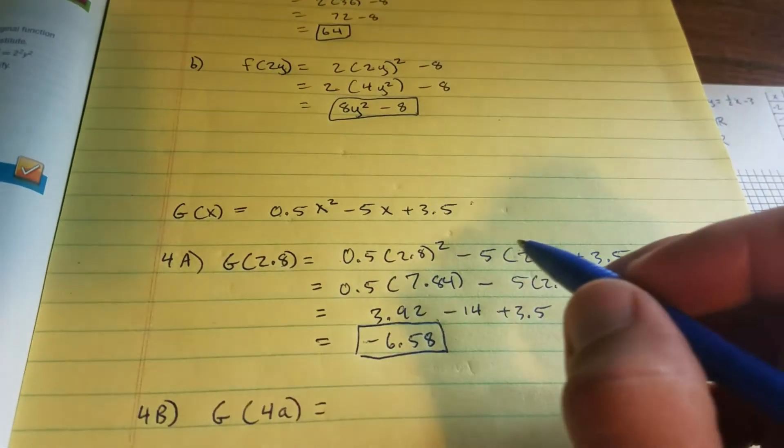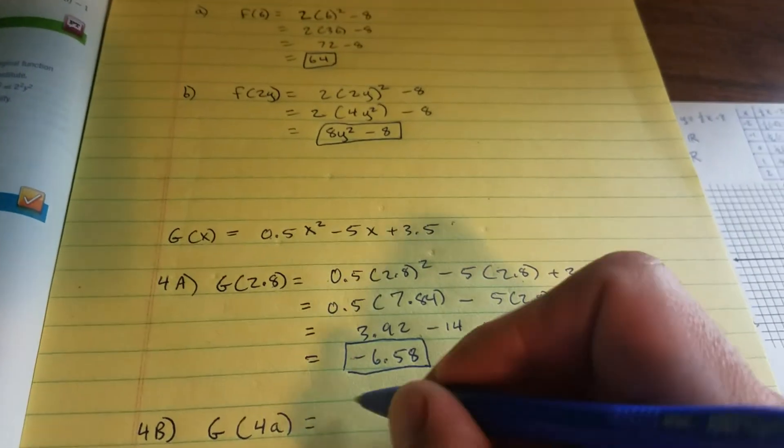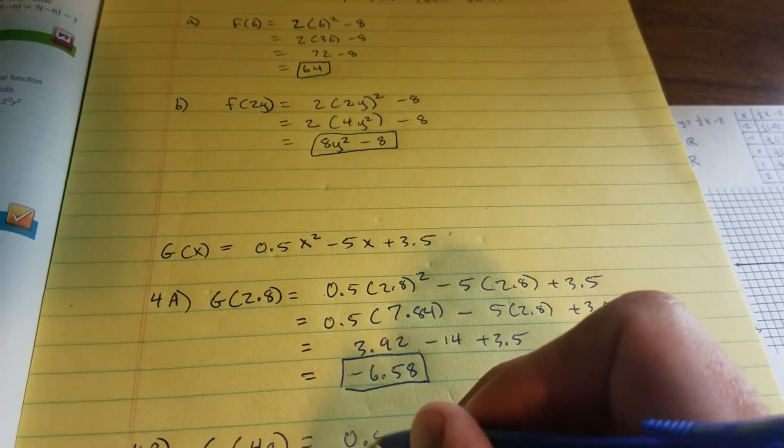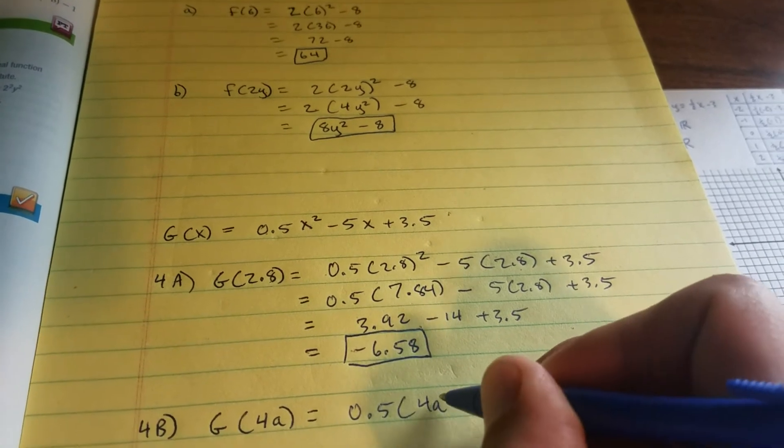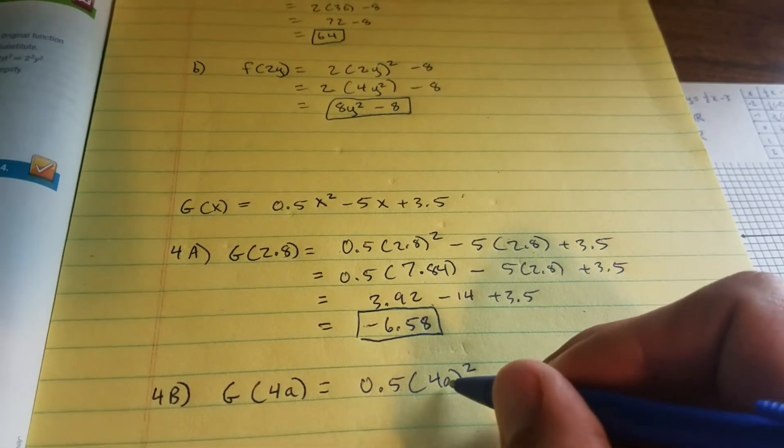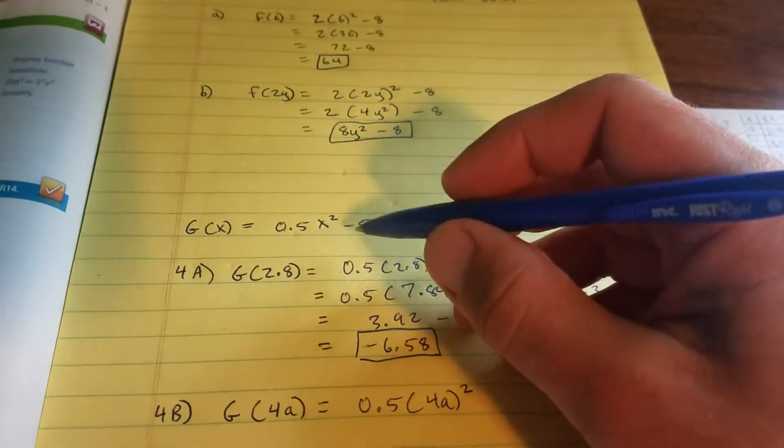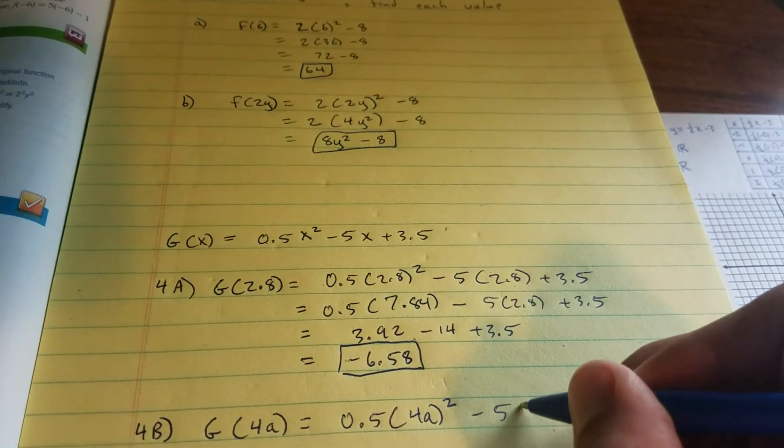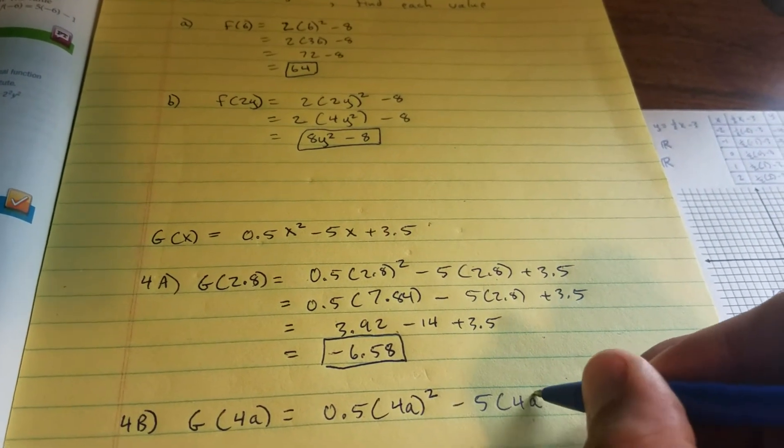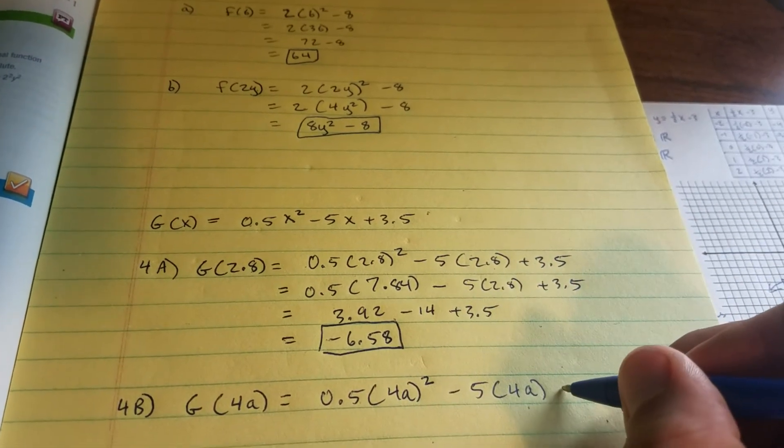Right where the x goes, replace the x with 4a. So that's going to be a half of 4a squared. Make sure the 4a goes in parentheses, minus 5, and then in parentheses, the 4a plus 3.5.